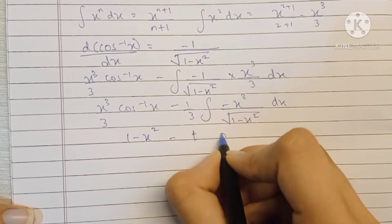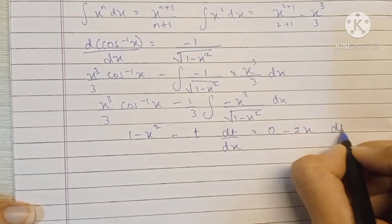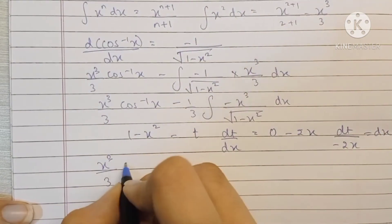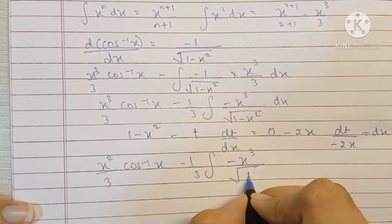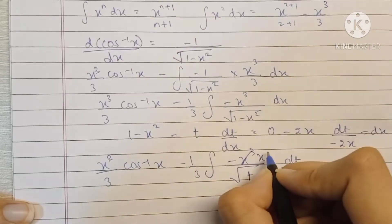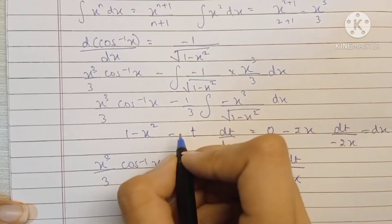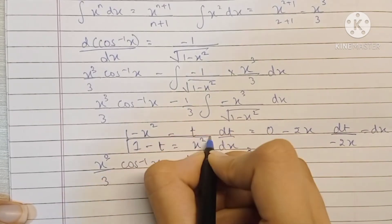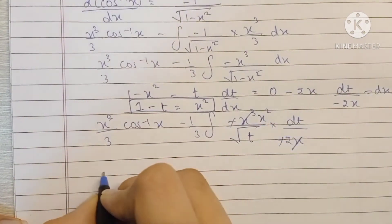If we let t equal 1 minus x squared, then dt by dx equals minus 2x, so dx equals dt upon minus 2x. Substituting, we have minus x cubed upon root t into dt upon minus 2x. We cancel one x and cancel the minus sign, leaving x squared in the numerator. Since t equals 1 minus x squared, we can write x squared as 1 minus t, giving us the entire integral in terms of t.